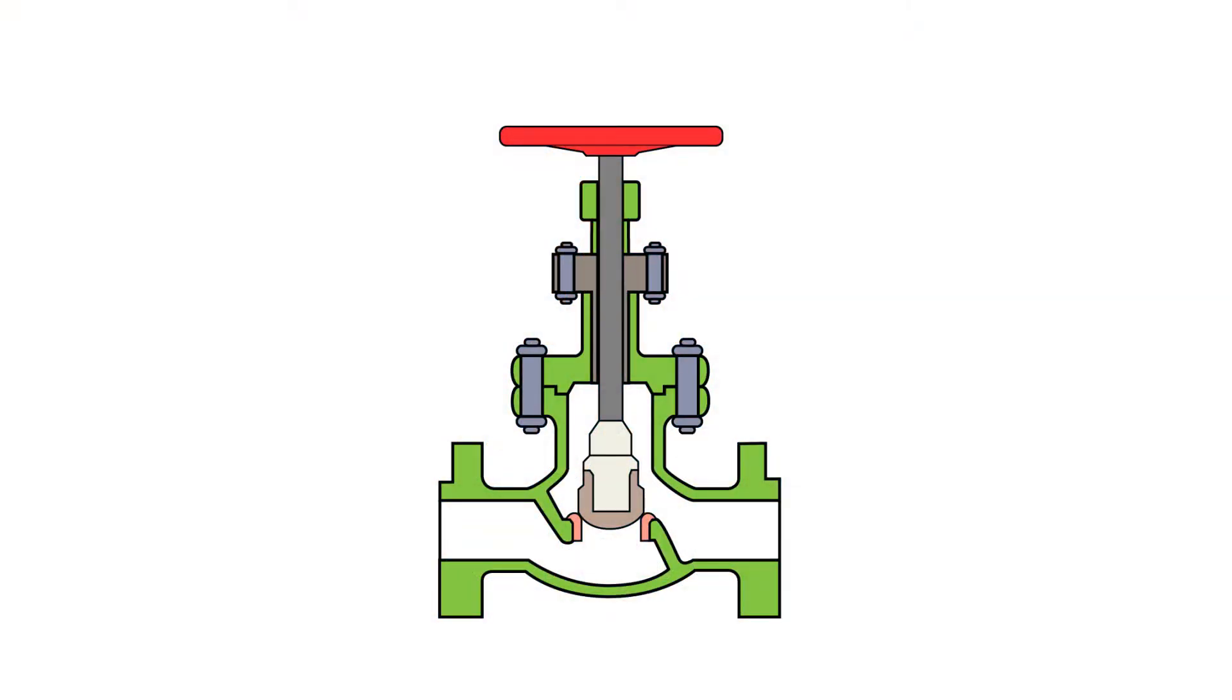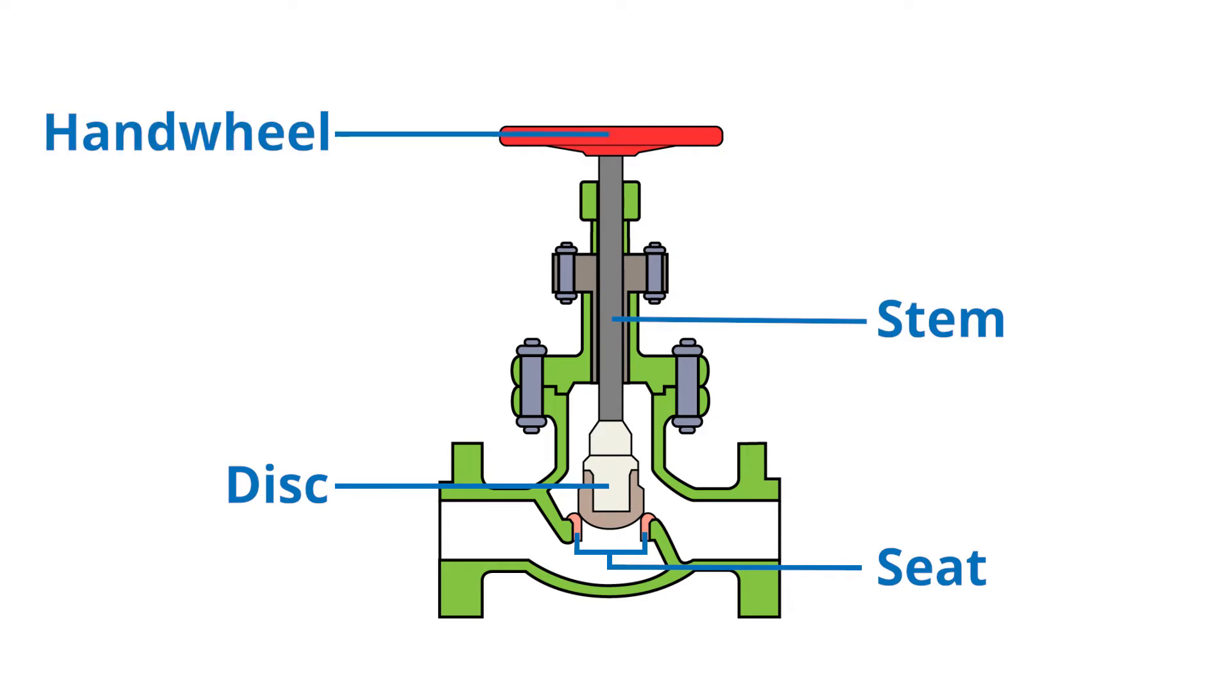Before explaining how they operate, let's review main components of a globe valve to provide a better understanding of how they work. The four main components that will contribute the most to how a globe valve works are the disc, the seat, the stem, and the hand wheel. Now that we've reviewed the basic components of a globe valve, let's talk about how they work.